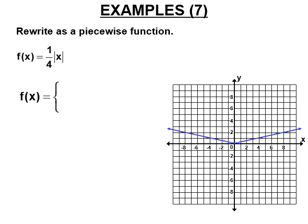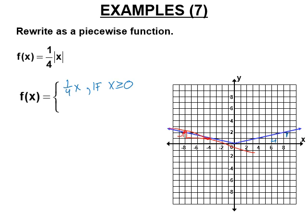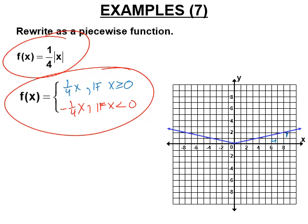Now we do f(x) = one fourth |x|. When x is greater than or equal to zero, the slope is one fourth and the y-intercept is zero, so we write one fourth x — no absolute value sign, because it's a linear function. The other side has slope negative one fourth, so when x is less than zero we write negative one fourth x. Both representations — the absolute value form and the piecewise form — have the exact same graph and points.